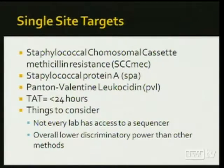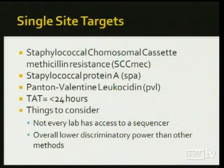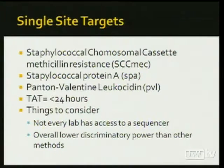Single-site targets for Staph aureus include things like the SCC-MEC, the spa (staphylococcal protein A gene), and the Panton-Valentine leukocidin gene, or PVL. Although these techniques are targeted and fast, many have lower discriminatory power than other methods because of the targeted approach. And in the case of the spa gene, not every lab has access to a sequencer, so this might not be the best choice.